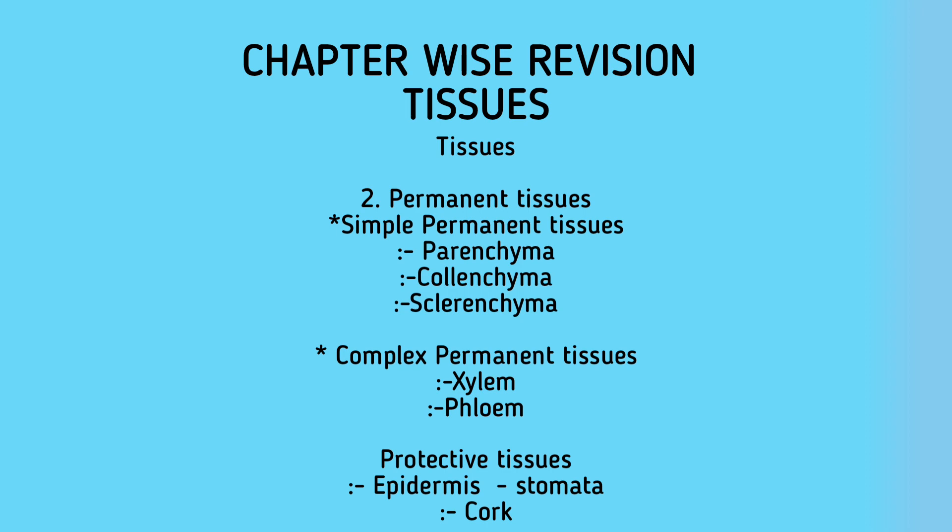Phloem tissue also consists of four types of cells: sieve tubes, companion cells, phloem fibers, and phloem parenchyma. Sieve tubes and companion cells help transport food materials from the leaves to other parts of the plant. Phloem fibers possess mechanical strength, and phloem parenchyma stores food materials.